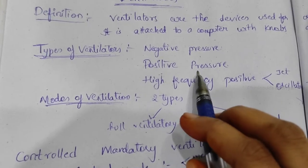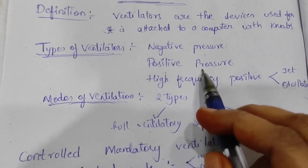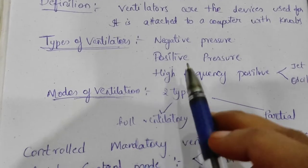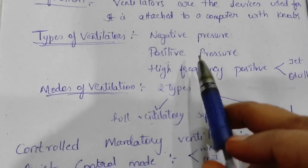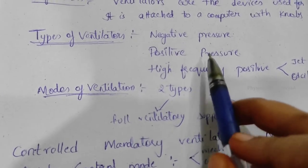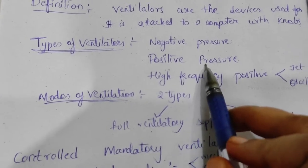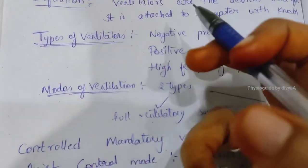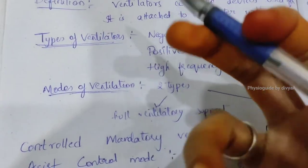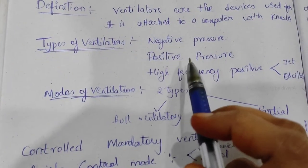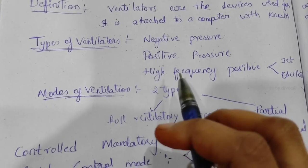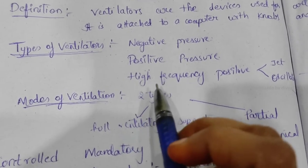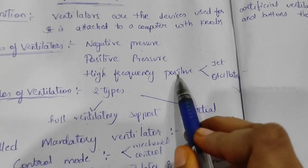Positive pressure ventilator: here, air is sent into the lungs at a pressure greater than atmospheric pressure. A super-atmospheric pressure is set up and air is driven through the trachea via a mask, pushing air into the lungs at more than atmospheric pressure.